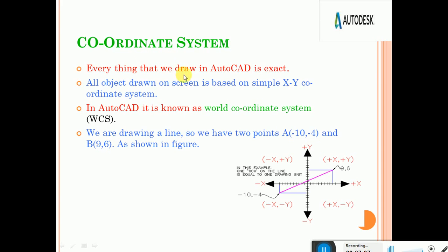This is the coordinate system and how it is working. Everything that we draw in AutoCAD is exact — we have to draw at the exact point. All objects drawn on screen are based upon the simple XY coordinate system. Two-dimensional drawings mainly use an XY coordinate system with X-axis and Y-axis. This is known as World Coordinate System. The center point is 0, 0 and the remaining will be taken as the corresponding X and Y axis.